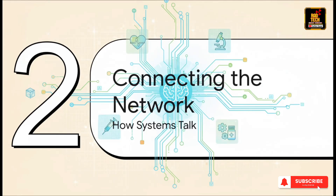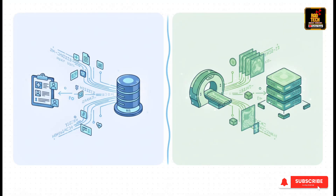The RIS is the master of its own universe in the radiology department, but it's not a solo act. Its real power comes from its ability to talk to all the other computer systems in the hospital, building a truly connected health network. For all these different systems to work together, they have to speak the same language — or in this case, two different languages. The first one, HL7, is for all the text-based information about you: your name, your doctor's order, the final report. The other one, DICOM, is the language just for the images themselves.